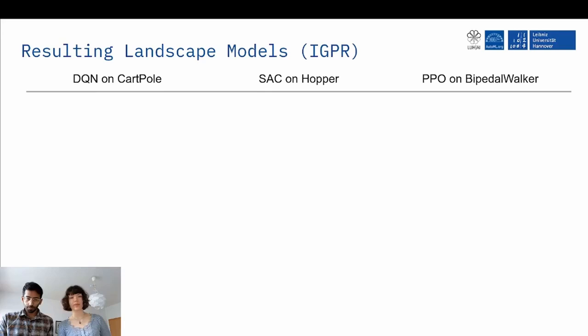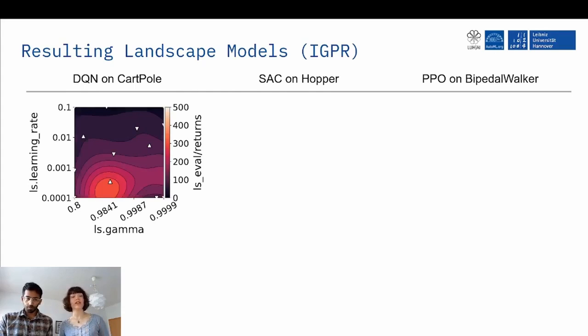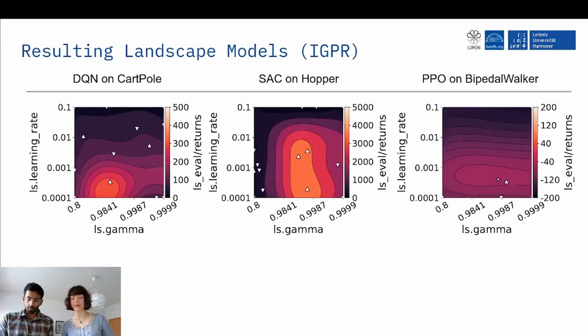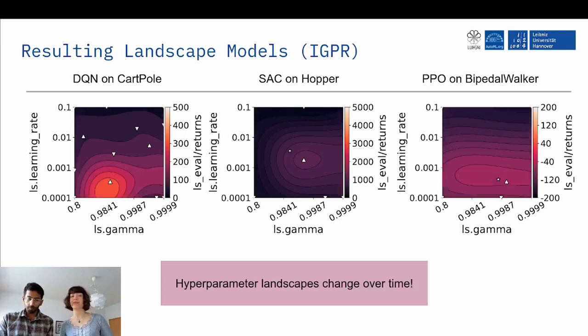So let's look at the landscapes. So the first landscape is DQN and what we can see is that for the different phases, the optimum moves quite a lot. So the brighter the area, the better the returns. This is one observation. Now for SAC, the landscape looks different. Also the optimum moves a little bit, but we perceive a more stable region. For PPO, we see a similar picture compared to SAC. Now to conclude, we can definitely say that the hyperparameter landscapes change over time.